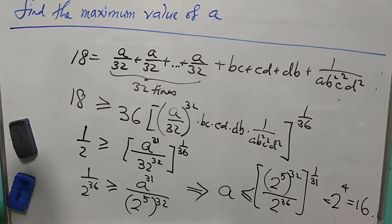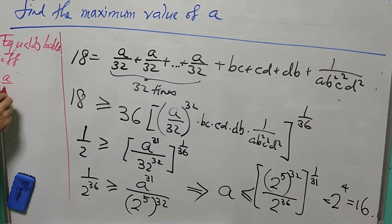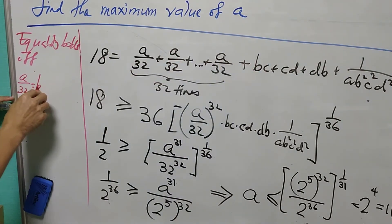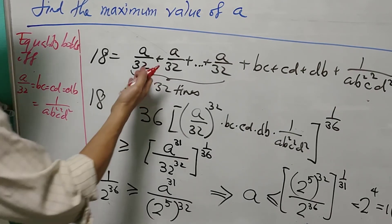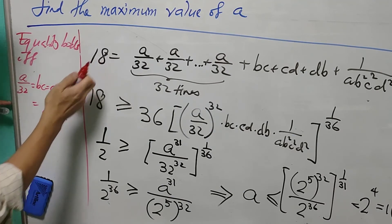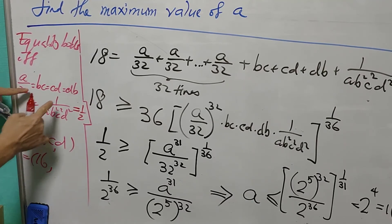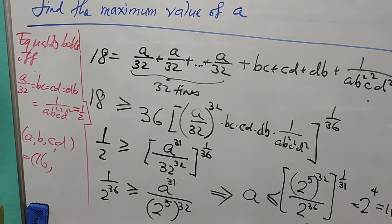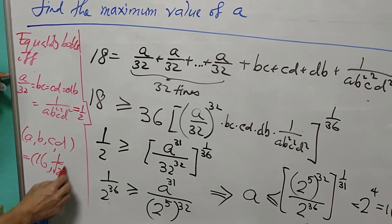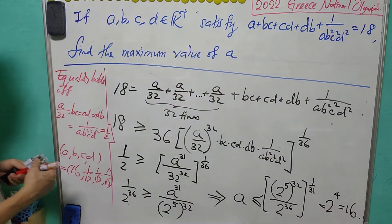We still need to verify that 16 is indeed the maximum value. Equality holds if and only if each of the 36 terms is equal. So A over 32 equals B equals C equals D equals 1 over AB squared C squared D squared, and the 36 terms sum to 18, meaning each term equals one half. This gives A equals 16, and B equals C equals D equals 1 over root 2. With these values, the equation is satisfied, confirming that 16 is the maximum value of A.